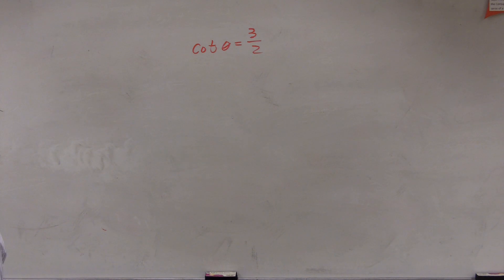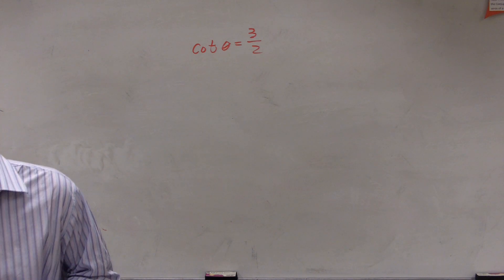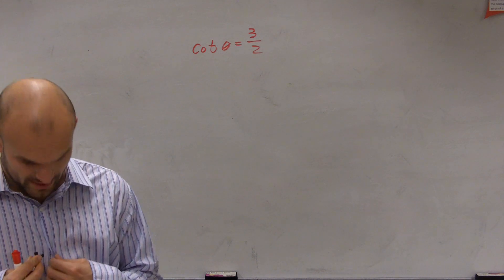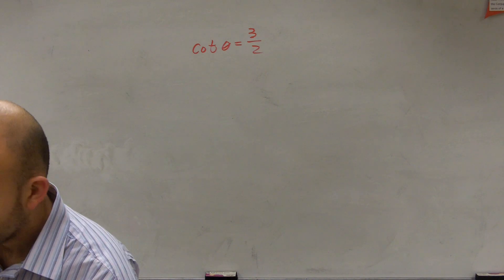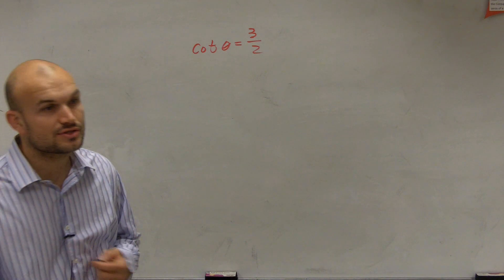This point only has coordinates but does not have our angle theta. Now, what we did before is when we were given that point, we could find that angle by using the unit circle. However, this is not a point that's on the unit circle.